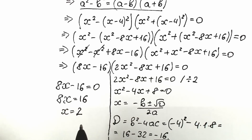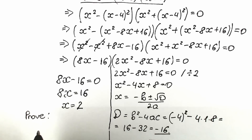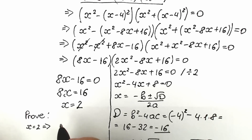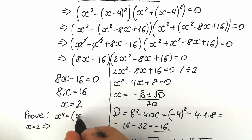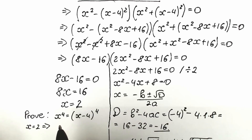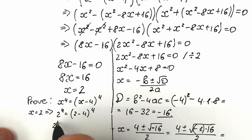We can easily check this root. Let's verify x equals 2. In the original challenge we had x to the fourth power equal to x minus 4 to the fourth power. Plugging in: 2 to the fourth power equals 2 minus 4 to the fourth power, which is minus 2 to the fourth power.